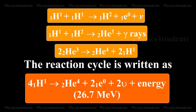The reaction cycle is written as 4-1-H1 gives 2-HE4 plus 2-1-E0 plus 2-nu plus energy, 26.7 million electron volts.